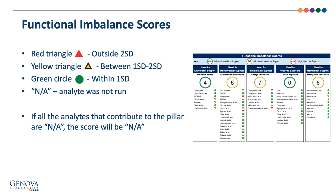Next to each biomarker listed in the pillars is an icon such as a circle or triangle. A red triangle indicates the biomarker was outside the reference range, or two standard deviations; the direction indicates whether high or low. A yellow triangle means the result was outside one standard deviation but not outside the reference range — commonly referred to as borderline. A green circle indicates the biomarker was within the normal or optimal range. If NA appears, that analyte was not run on the test.